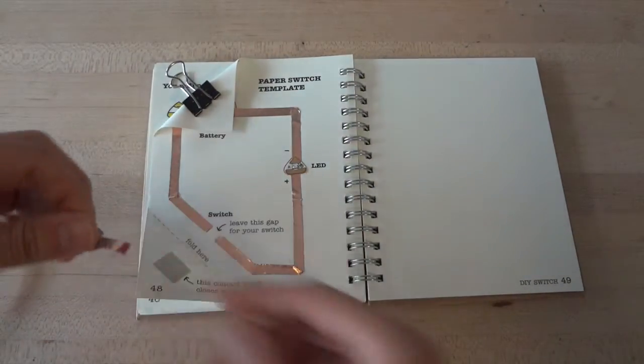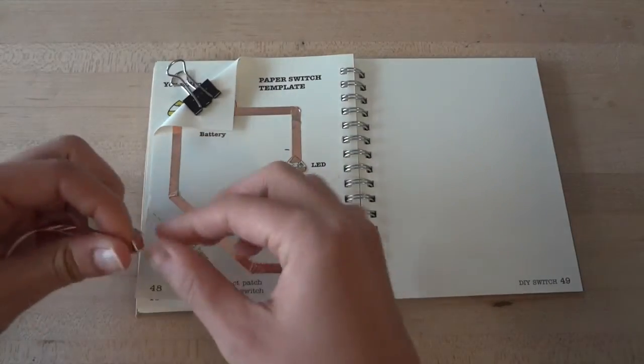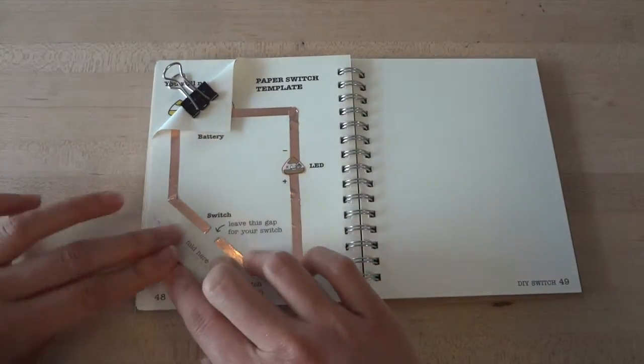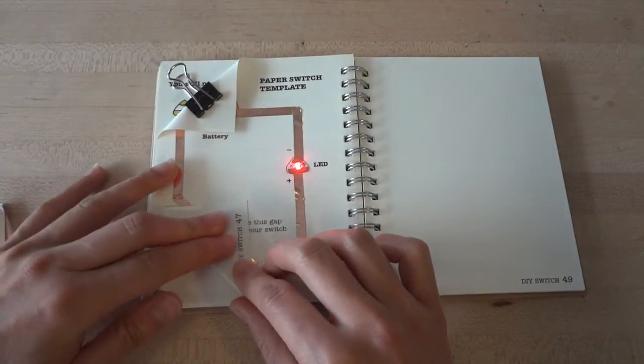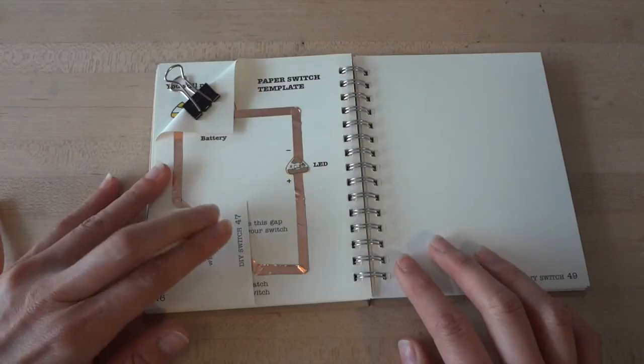To make a more permanent switch, we can tape copper tape over the flap that corresponds with the gap in your circuit. Now, when you fold the bottom corner of your page, you close the gap in the circuit and you turn your light on, making a switch.